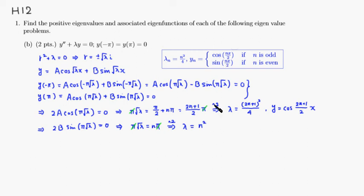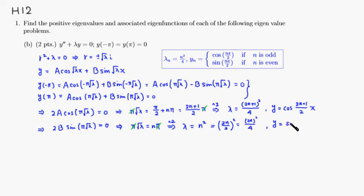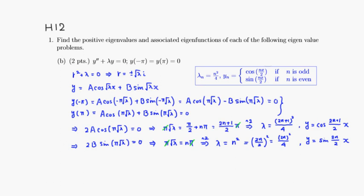The corresponding eigenfunction is sine of N over 2 times X. So we have this eigenvalue N squared and its corresponding eigenfunction.